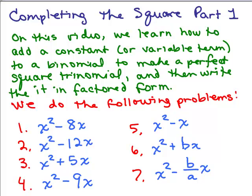This is part one of completing the square. On this video, we learn how to add a constant or a variable term to a binomial to make a perfect square trinomial and then write that perfect square trinomial in factored form.